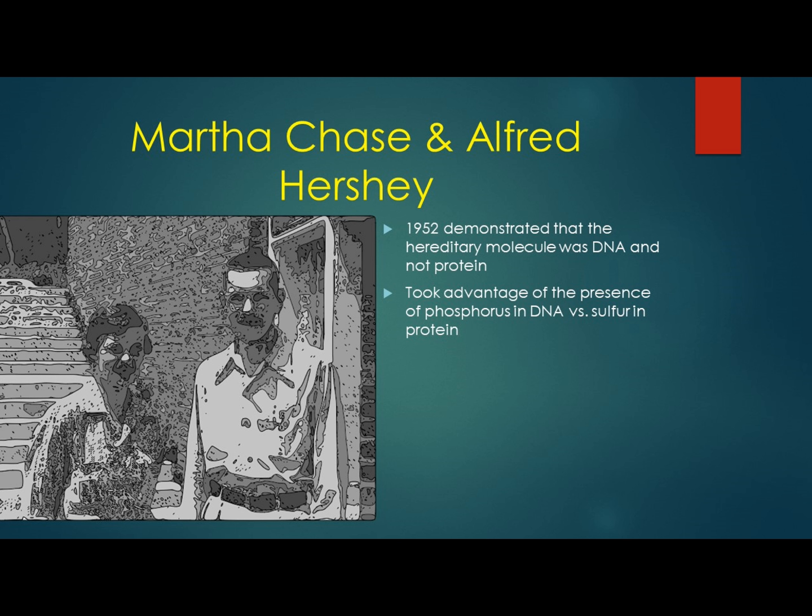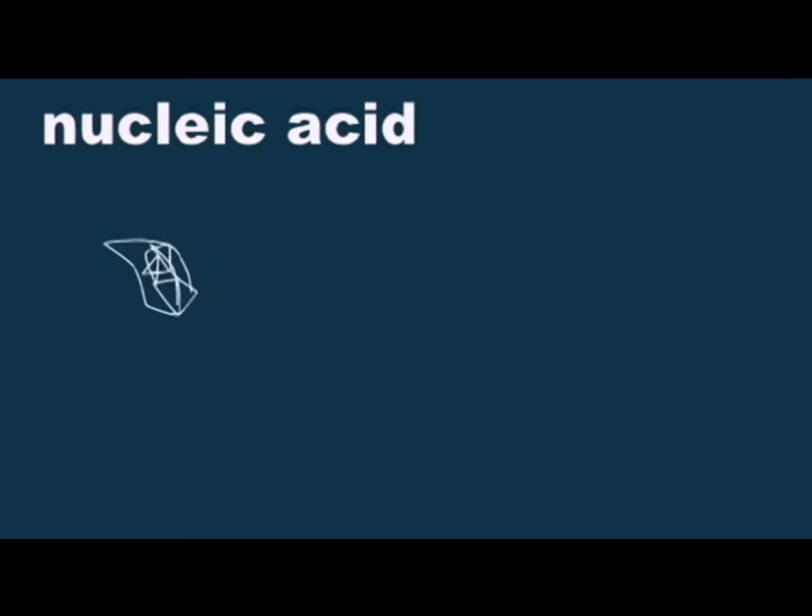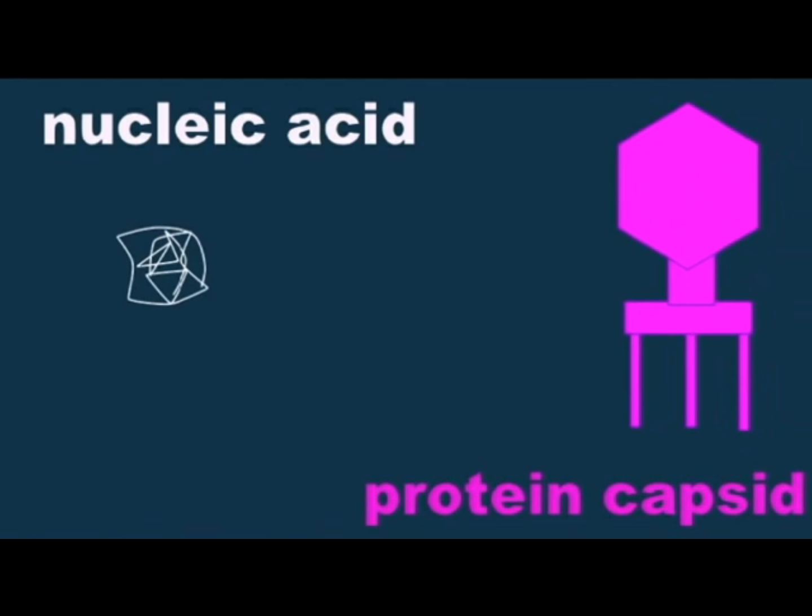Many individuals did not believe this because DNA was rather simple compared to the great diversity of proteins. Therefore, the genetic code for organisms as complex as humans should certainly be proteins instead of the simpler DNA.